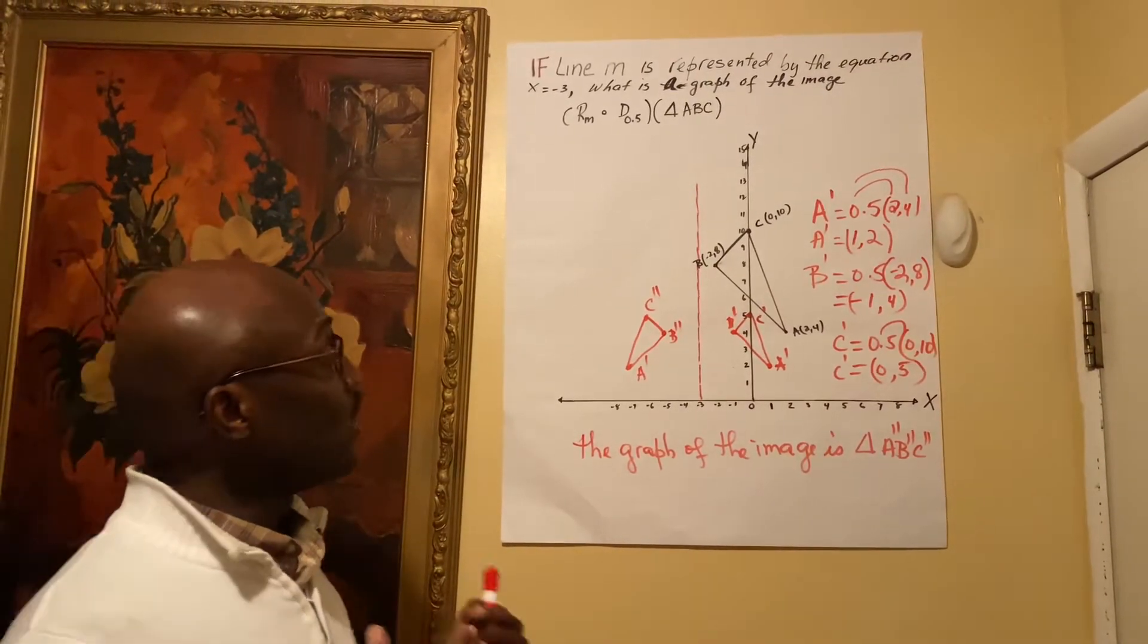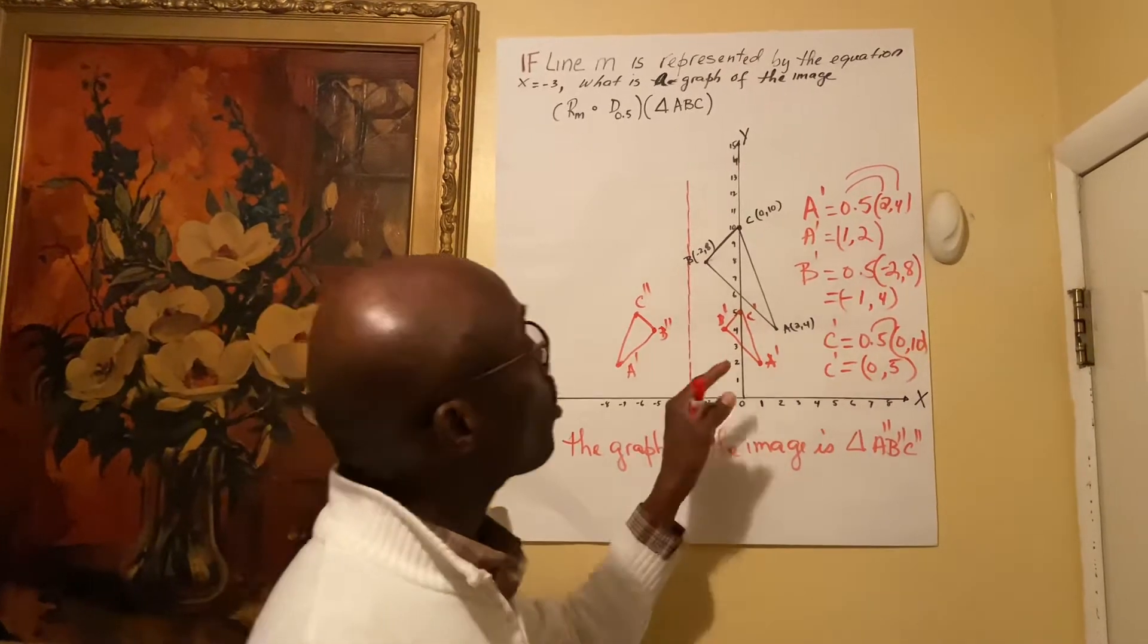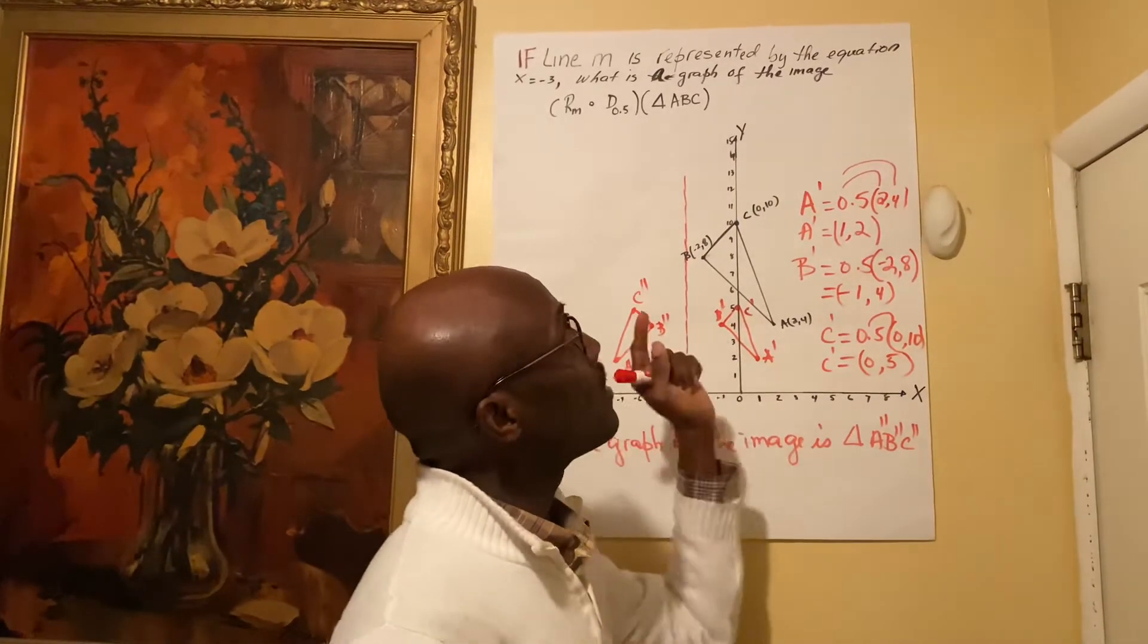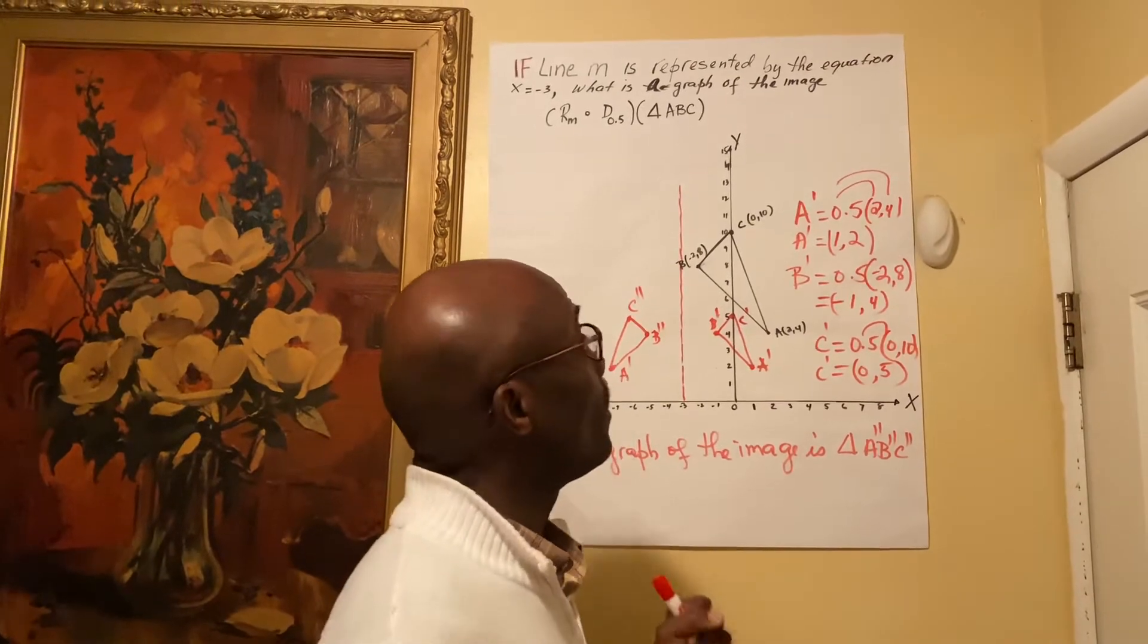Basically, we need to multiply each coordinate of the pre-image by 0.5 to get the image.